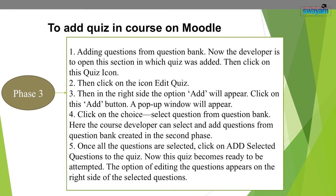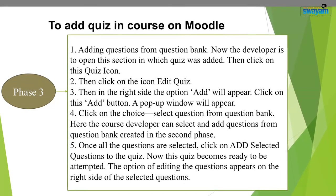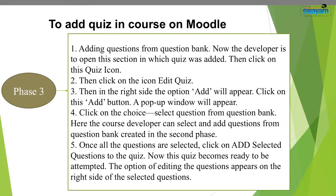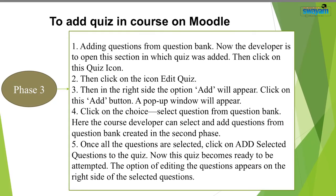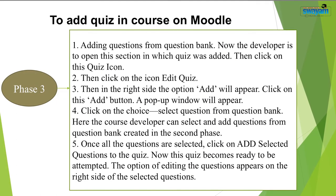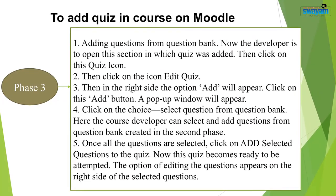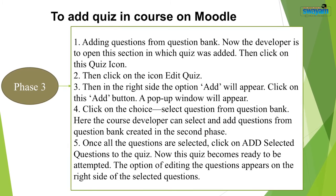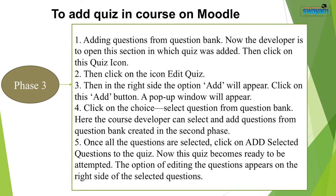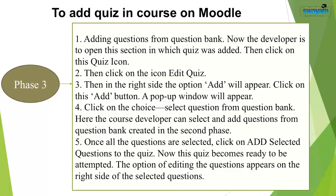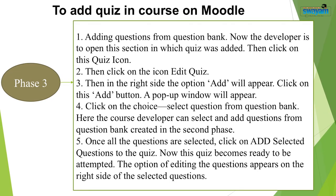After uploading and importing the questions, the third phase will start. In the third phase, adding questions from the question bank will be done. The developer or teacher opens the section in which the quiz was added, then clicks on the quiz icon. On the right side, an 'Add' button will appear — click on it. A pop-up window will appear. Select 'Questions from the question bank.' The course developer can select and add questions from the question bank created and imported in the second phase. Once all questions are selected, click on 'Add selected questions to the quiz.' The quiz is now ready to be attempted, and the option of editing questions appears on the right side.